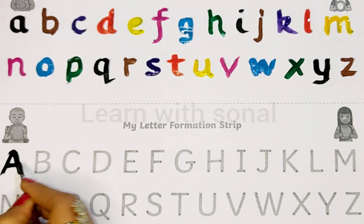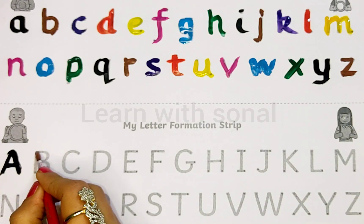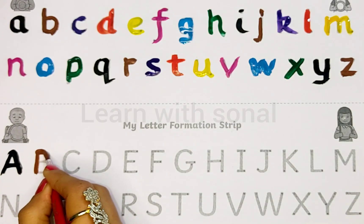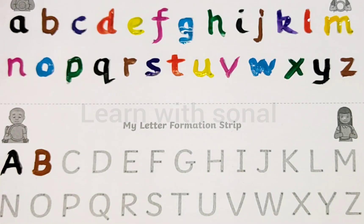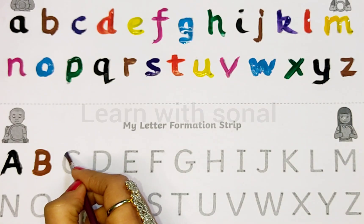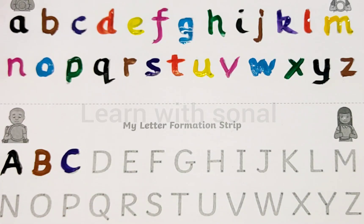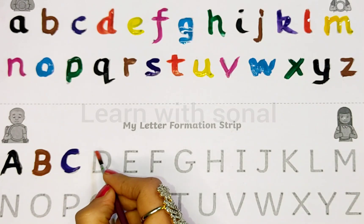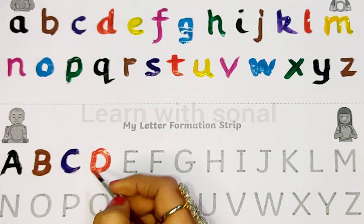A for apple. B, B for basketball. C, C for cake. D, D for dog.